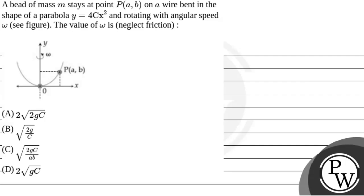Hello. Let's read the question. The question says that a bead of mass M stays at point P on a wire bent in the shape of a parabola y = 4Cx², rotating with angular speed Omega as shown in the figure. The value of Omega is — we have to neglect friction. So we will solve this question.